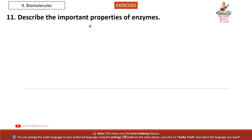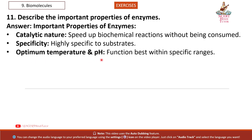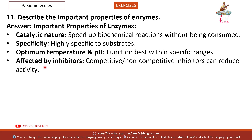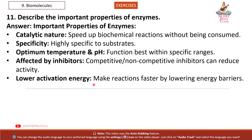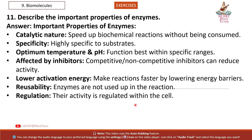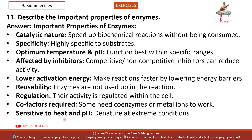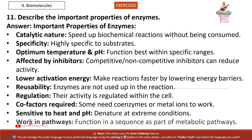Question 11: Describe the important properties of enzymes. Answer. Important properties of enzymes: catalytic nature — speed up biochemical reactions without being consumed; specificity — highly specific to substrates; optimum temperature and pH — function best within specific ranges; affected by inhibitors — competitive and non-competitive inhibitors can reduce activity; lower activation energy — make reactions faster by lowering energy barriers; reusability — enzymes are not used up in the reaction; regulation — their activity is regulated within the cell; co-factors required — some need co-enzymes or metal ions to work; sensitive to heat and pH — denature at extreme conditions; work in pathways — function in a sequence as part of metabolic pathways.